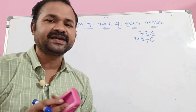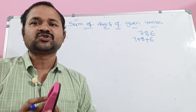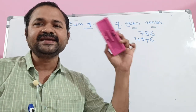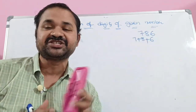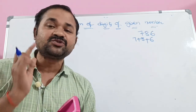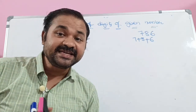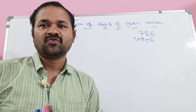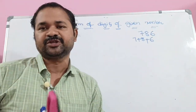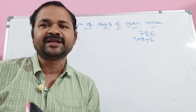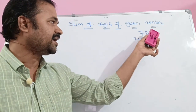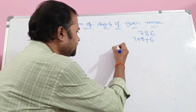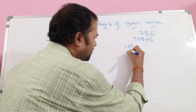Suppose our number is 786. We need to extract 7, 8, and 6 from it separately. We can easily extract the last digit 6 using the modulo operator. When we perform modulo, we get the remainder. So 786 modulo 10 gives remainder 6.